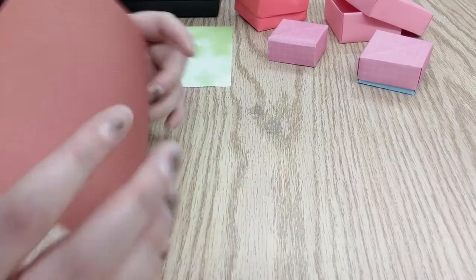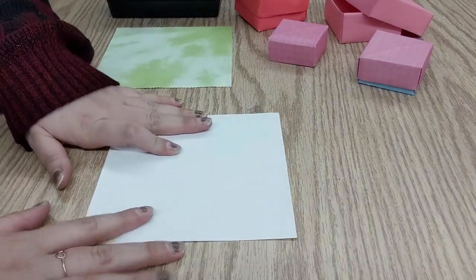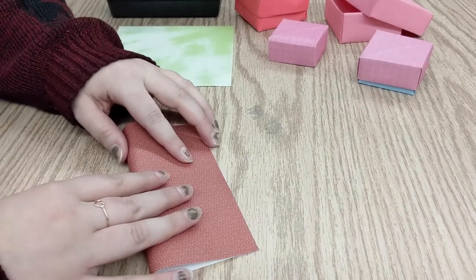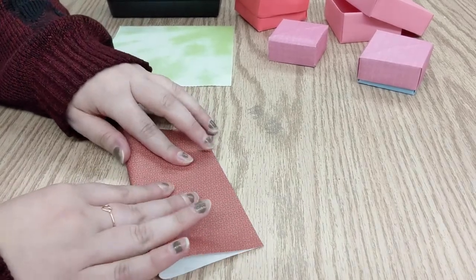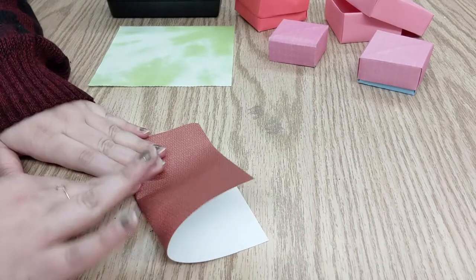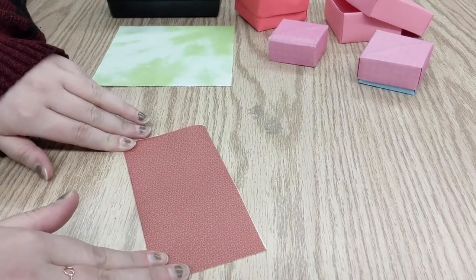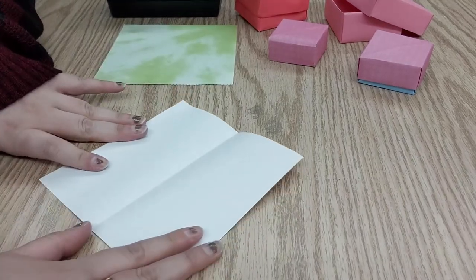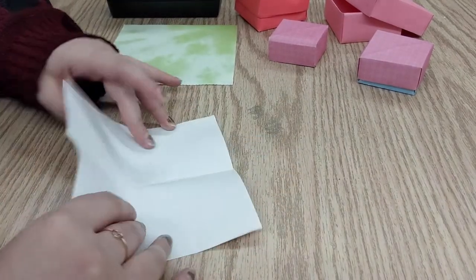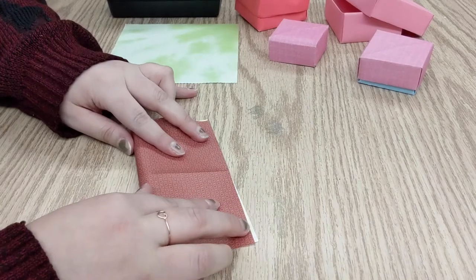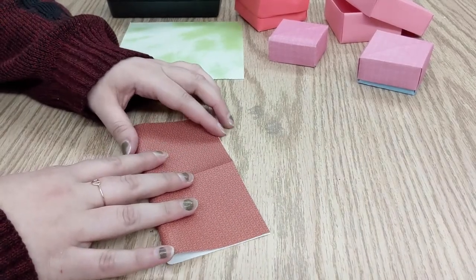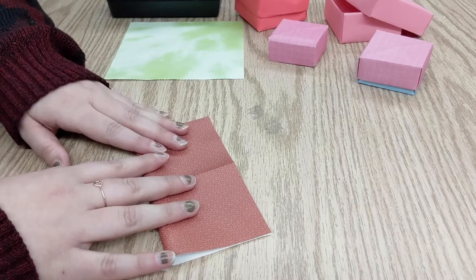So the first thing you want to do is have your paper like this, and you are going to fold it in half. Now remember, the crisper your folds are, the stronger your box is going to be, but you want to make sure you're in the right spot, or else you'll have trouble fitting it together later. So now you fold it in half one way, unfold it, and do the same thing the other way. Make sure you line those edges up as best as you can.